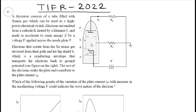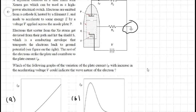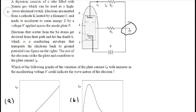The electrons are getting emitted from this plate K and these electrons are getting further accelerated through this potential difference which is applied between plate K and P. There is a conducting envelope that transports the electrons back to the zero potential by means of this grounding you can see here, and it asks what should be the variation of this plate current as we change the accelerating potential and that could indicate the wave nature of the electron.